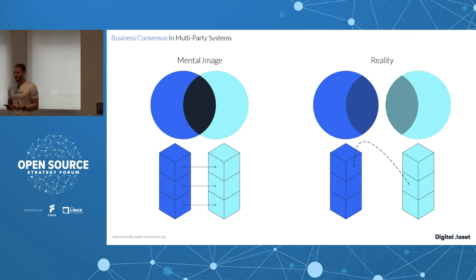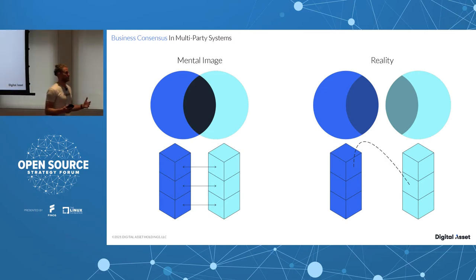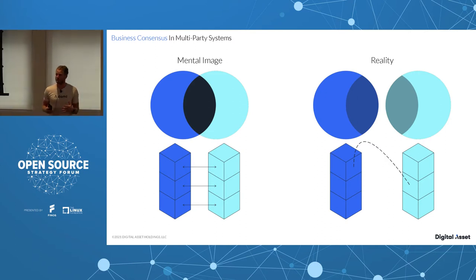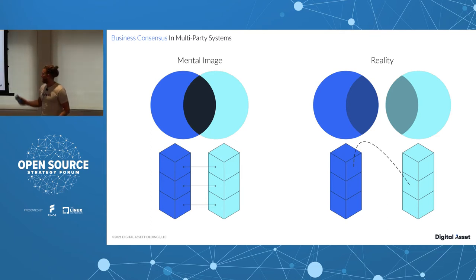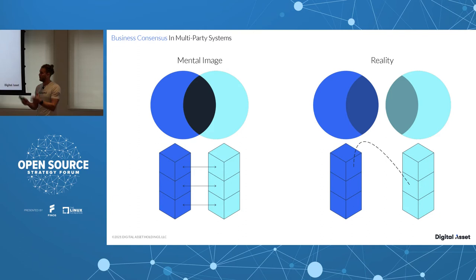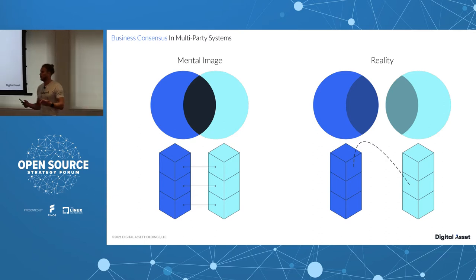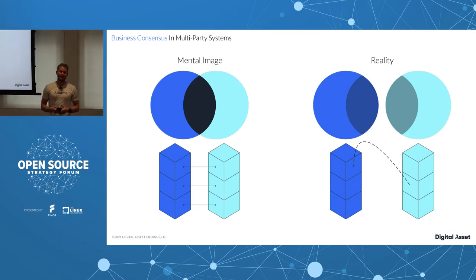So silos exist and have a negative effect — but why is it so difficult to integrate data? It comes down to business consensus. If all parties had the same information and shared a true understanding of current state, there'd be no problem. Our naive mental image of data integration shows two parties with their own data and a shared portion in the middle — we assume all the right data is effectively shared and integrated.